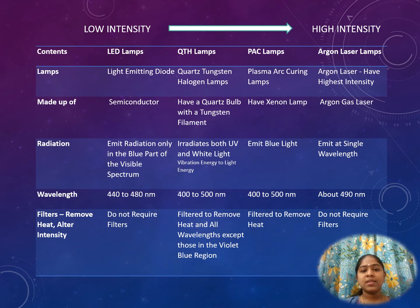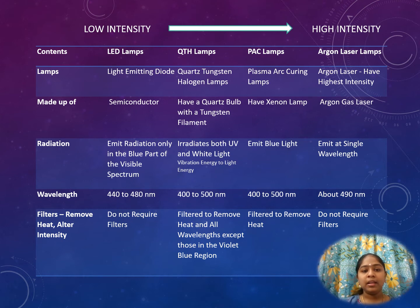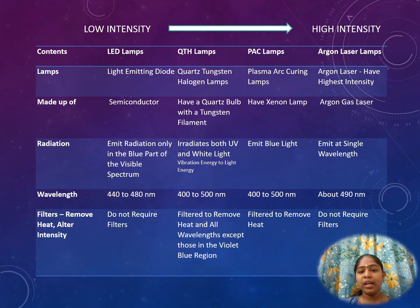Comparing the curing lamps — LED, QTH, PAC, and argon laser — LED lamps have the lowest intensity while argon laser lamps have the highest intensity, in order from low to high intensity. LED lamps contain a light emitting diode; QTH is a quartz tungsten halogen lamp; PAC is a plasma arc curing lamp; and argon laser lamps have the highest intensity. LEDs are made up of semiconductors, QTH is made up of a quartz bulb with a tungsten filament, PAC lamps are made up of a xenon gas plasma, and argon laser lamps use argon gas laser.